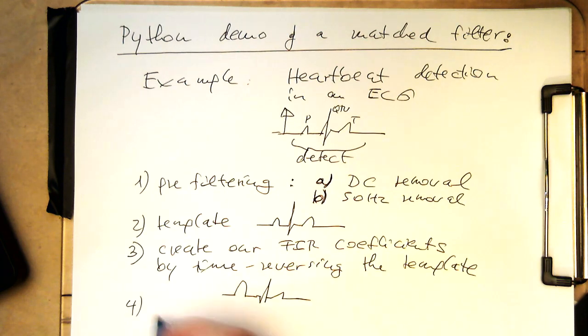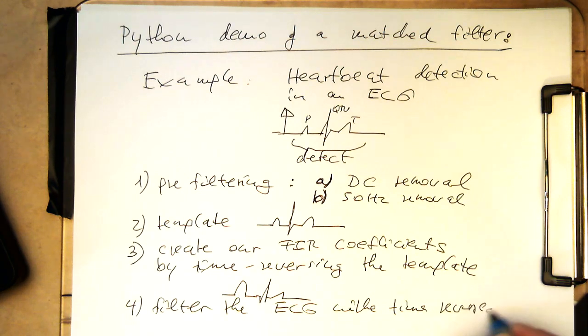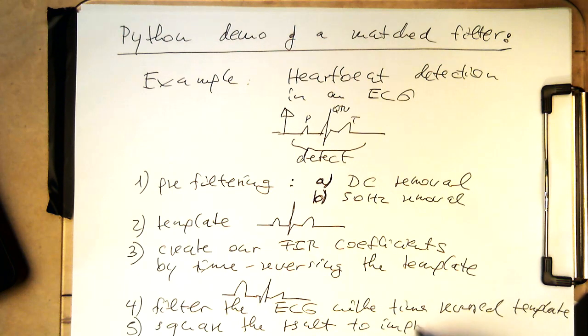So then we filter it, filter the ECG with the time reversed template. And then five, what we also usually just do, we square the result to improve signal-to-noise ratio. Okay, so let's do that. That's very, very simple.